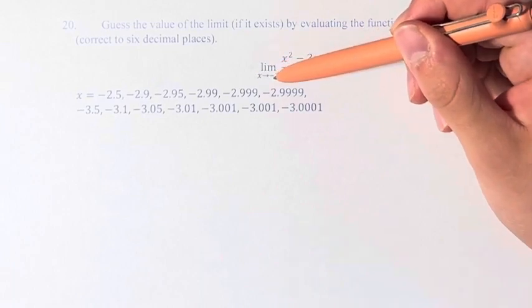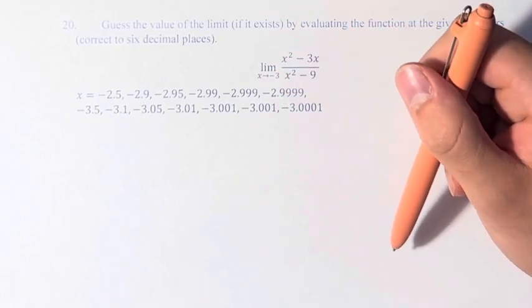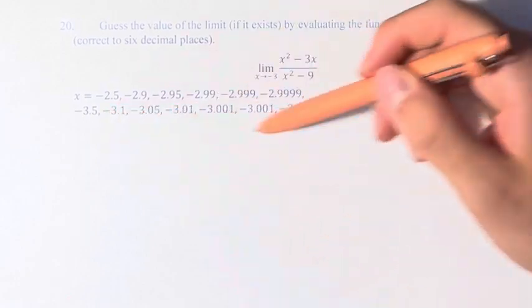So we have the limit as x approaches negative 3 of x squared minus 3x over x squared minus 9. So we have to evaluate this fraction at the given values.